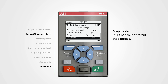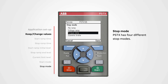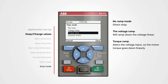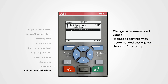Stop mode: PSTX has four stop modes. To change the setting, push edit. The most common one is the no ramp mode, where the application coasts to stop. The voltage ramp will ramp down the voltage linearly and works well for applications like conveyor belts. The torque ramp alters the voltage input so the motor torque goes down linearly — this mode is vital for the water industry, particularly for pump applications. PSTX has a unique torque algorithm that goes through a feedback loop creating an optimized stop for pump applications. The dynamic brake mode will stop the motor quicker than a regular stop and is suitable for applications with big moment of inertia and extended stop time, such as a sawmill. Use the navigation buttons to change the setting, then push save.